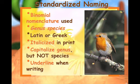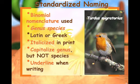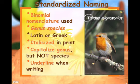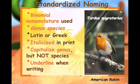When handwritten rather than typed, you underline the genus and species. For example, we call this bird a robin, but its Latin name is Turdus migratorius — the genus 'Turdus' is capitalized and the species 'migratorius' is lowercase. This is the American robin.